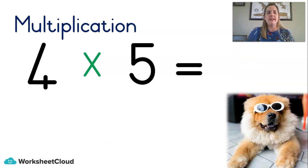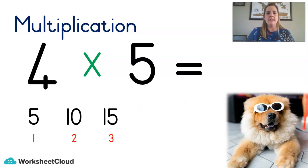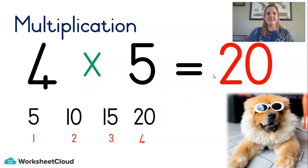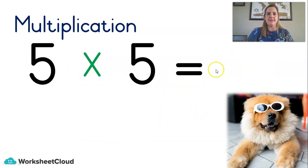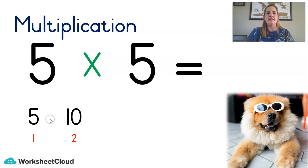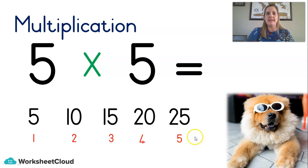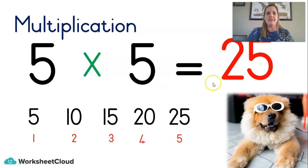We're going to continue counting in fives — I'd like you to try this method with us today. Five, ten, fifteen, twenty. We did it four times for four times five and the answer is twenty. Five times five — how many times are we counting in fives? Five times. So let's go: five, ten, fifteen, twenty, twenty-five. Easy peasy. Five times five is twenty-five. Well done.